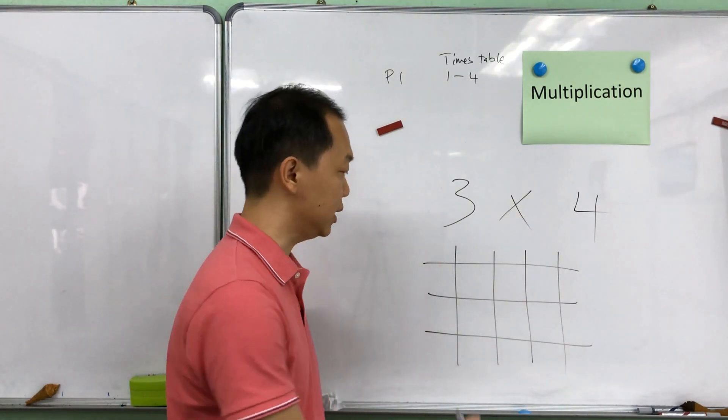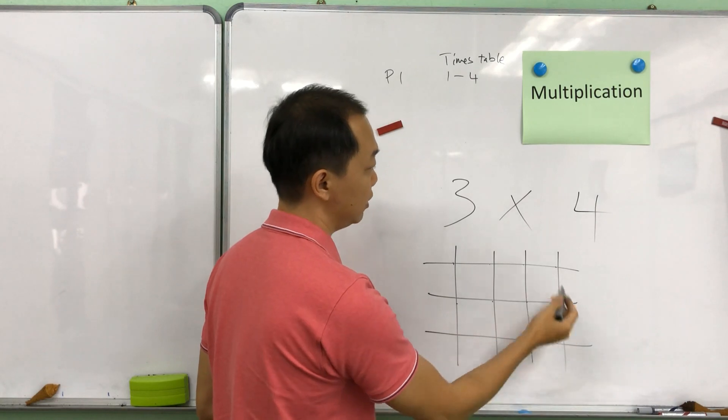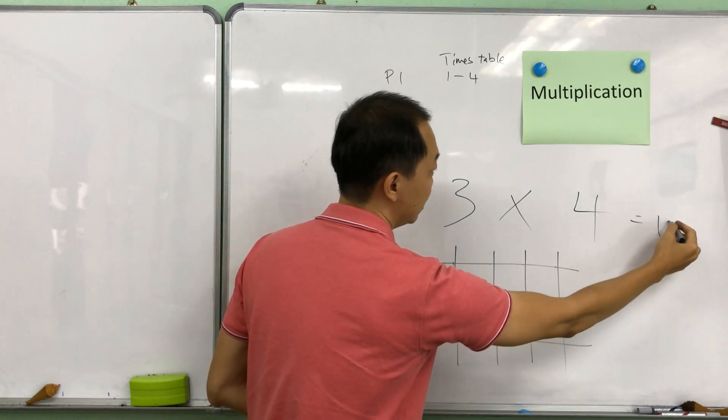And what they have to do is to just count: 1, 2, 3, 4, 5, 6, 7, 8, 9, 10, 11, 12. So 3 times 4 equals to 12.